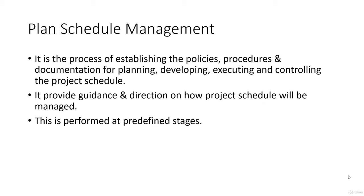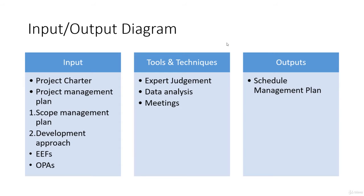This is performed at predefined stages — usually at the initial level of a project. Looking at the input/output diagram: inputs include the project charter, management plan, scope management plan, and the development approach, which is very critical. External environmental factors are also critical — changes in government policies, major societal or economic issues can impact project delivery. Organizational process assets include the templates and tools a company uses; better tools make coming up with a timeline much easier. For tools and techniques, we use expert judgment, data analysis, and meetings.